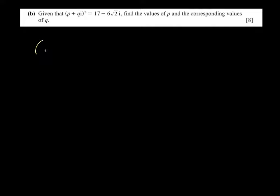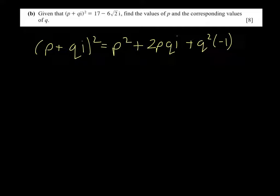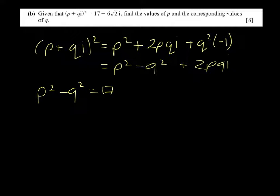The only difference here in this solution is they have left their final answer in fractions. So if p plus qi all squared would be p squared plus 2pqi plus q squared i squared, so that's p squared minus q squared is the real part, and 2pqi is the imaginary. So p squared minus q squared is 17, and 2pq equals minus 6 root 2.